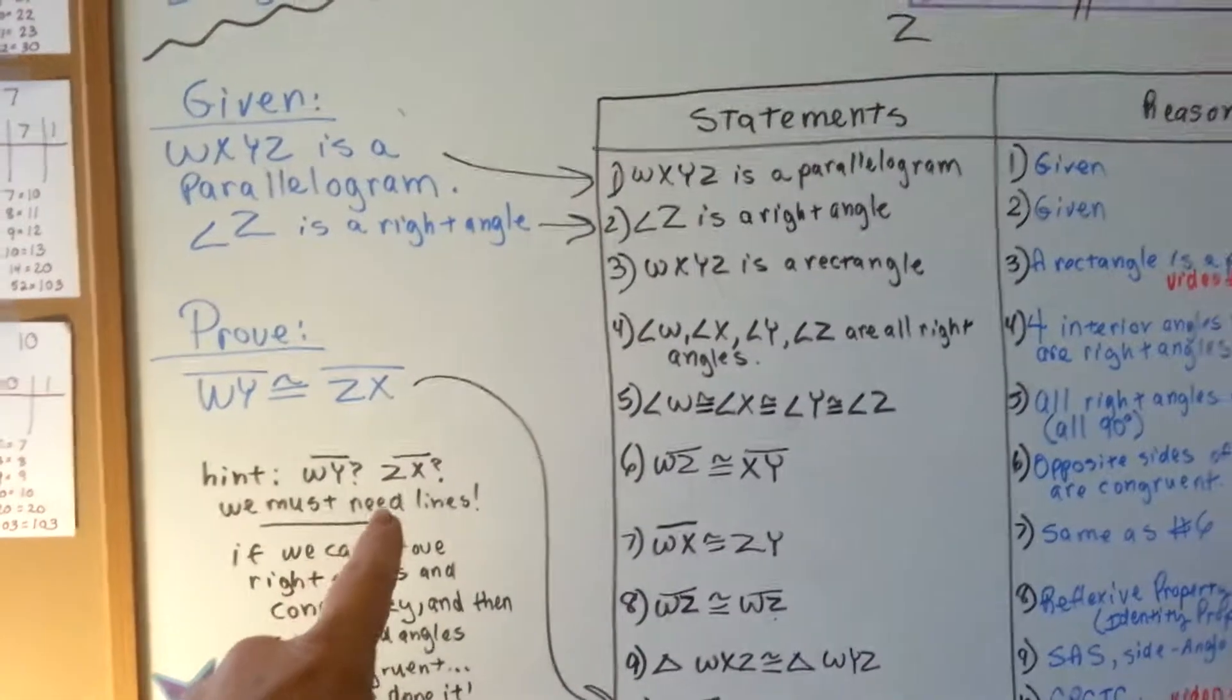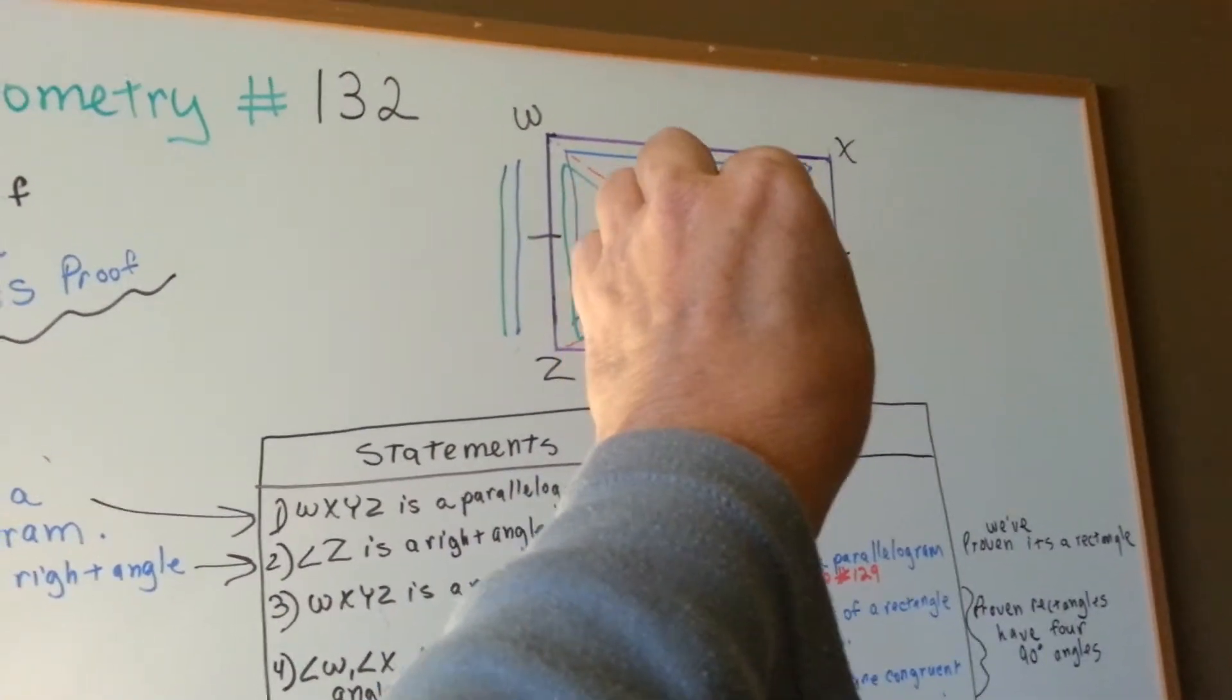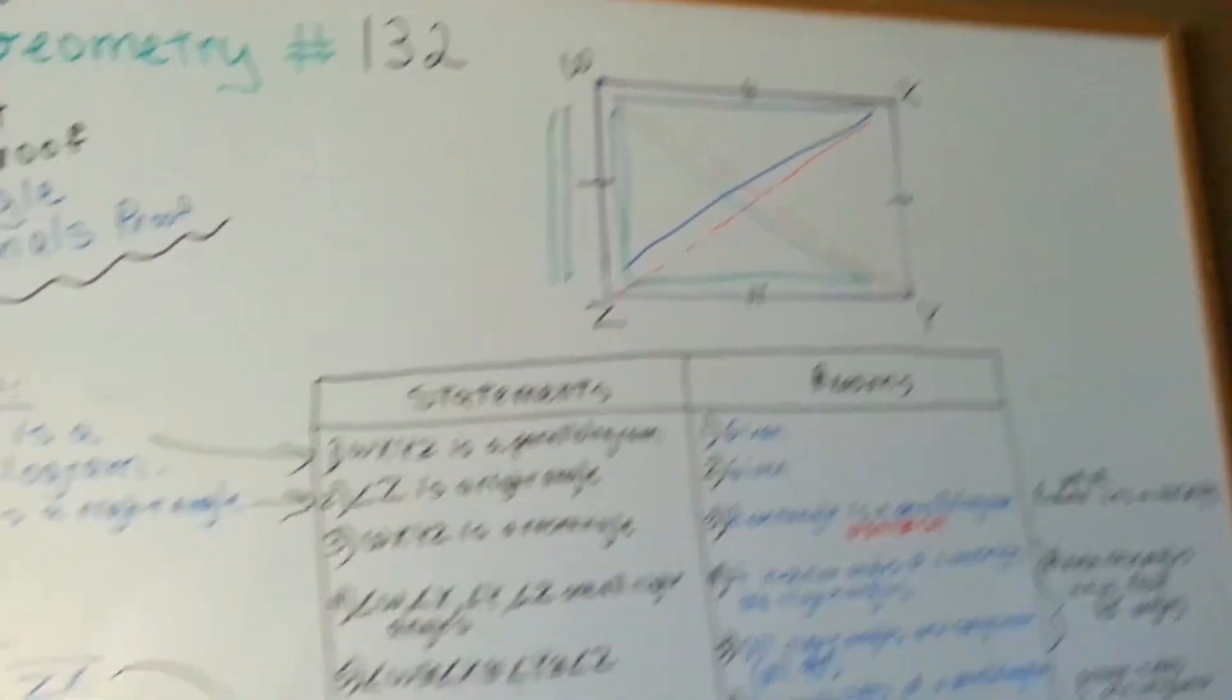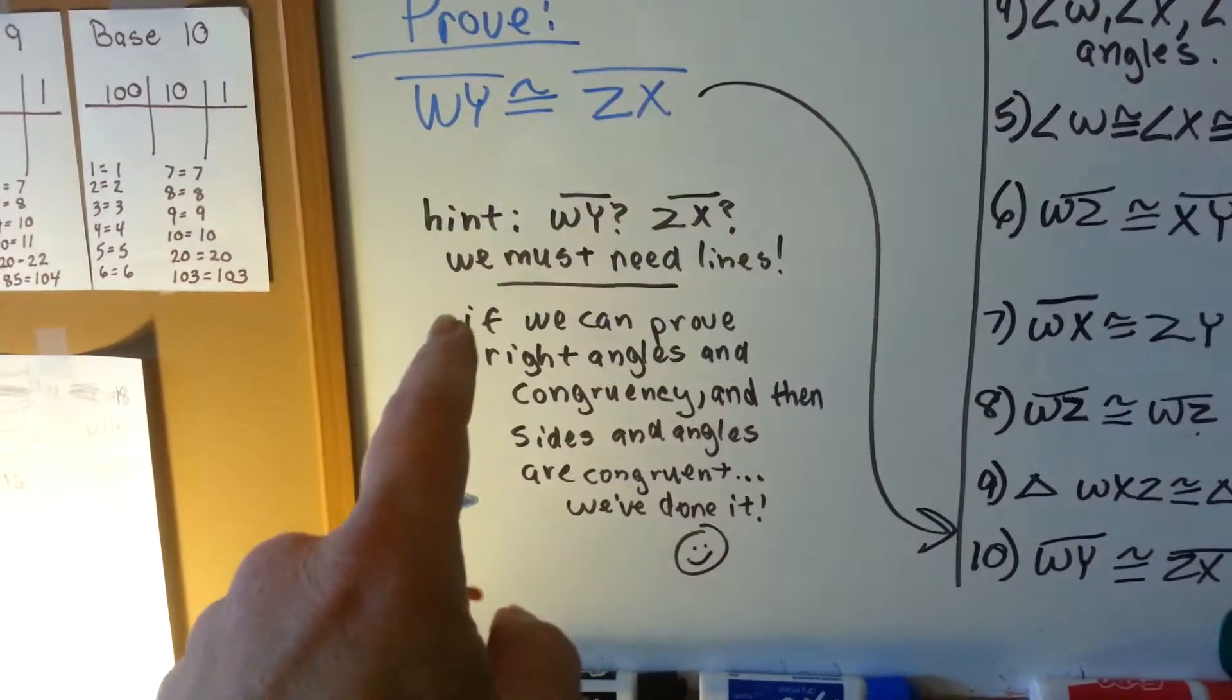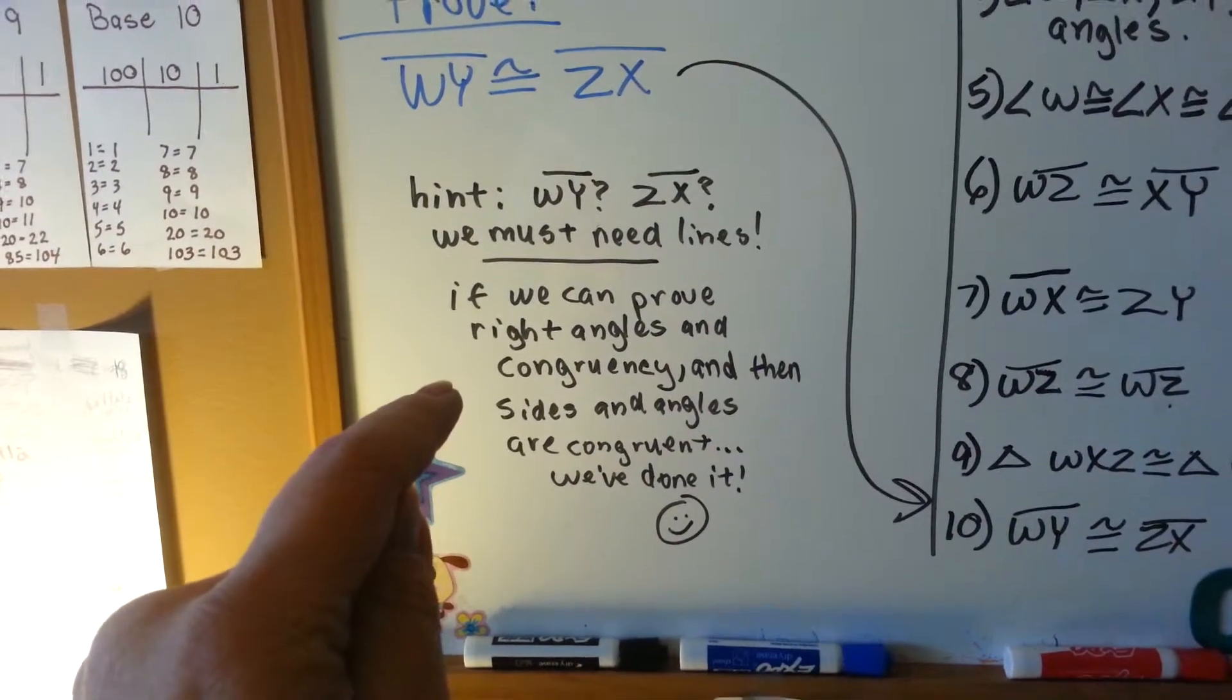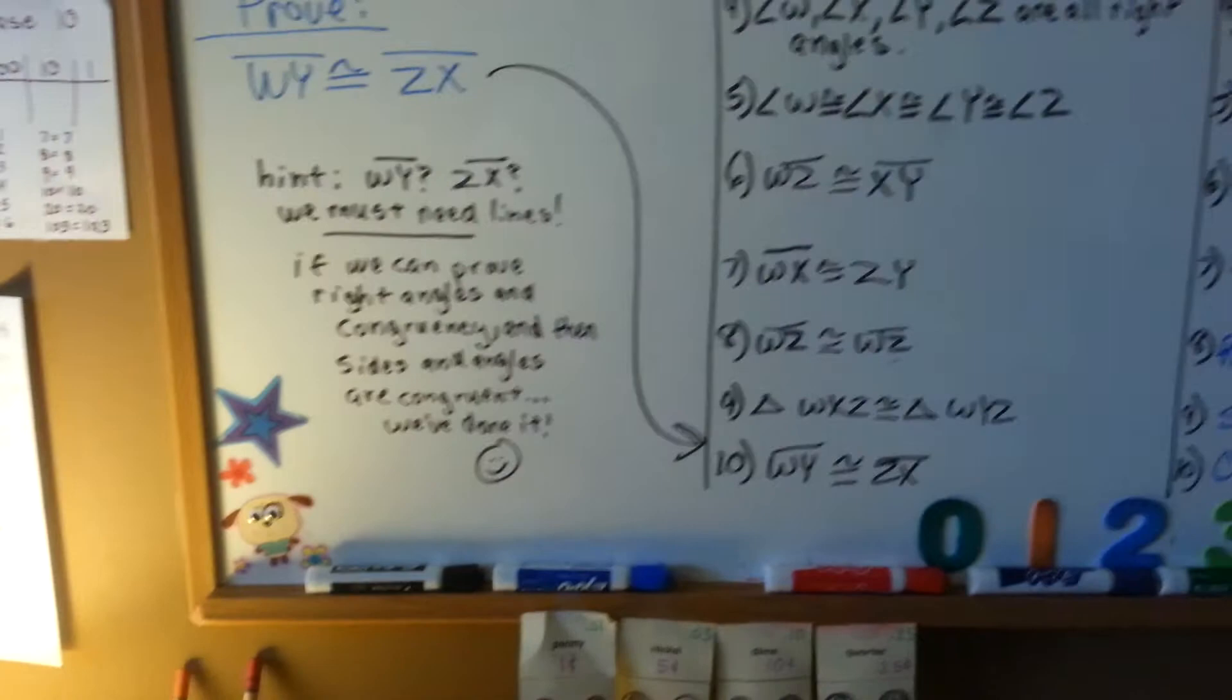And then it says over here, ZX. And if it were completely empty inside, when you started doing your work, you'd say, ah, there's supposed to be a line there. So, that's a hint. So, that told you to draw the lines. So, if we can prove right angles and congruency, and then sides and angles are congruent, we've done it. So, that's what we need to do.